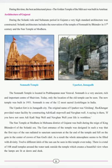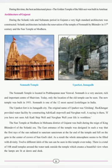The Uparcote Fort is in Junagadh city. Its original name was Giridurg. During the Rajput era, king Ra Khengaar provided water facilities by constructing Adi Khadi and Navgan well. A famous saying goes: if you have not seen Adi Khadi and Navgan well, your life is worthless — meaning everyone should visit these wells at least once in their lifetime.